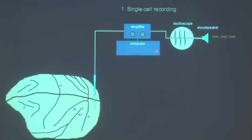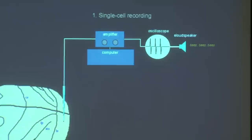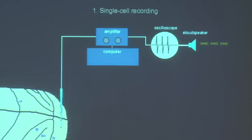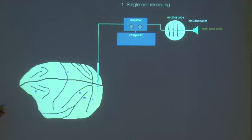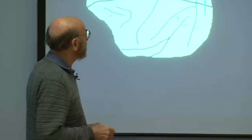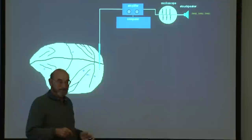A clever trick is to put the signal onto a loudspeaker so every time a cell fires you literally hear a beep. The big advantage is that many cells see only a tiny portion of the world, so if you don't know where the receptive field is, you can move a projector around while listening. Instead of having to watch the oscilloscope, you can hear the responses and perform all sorts of experiments with your eyes free.